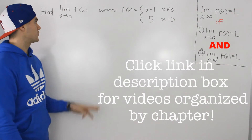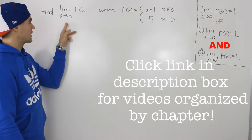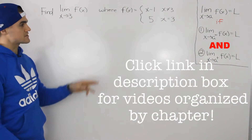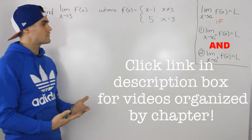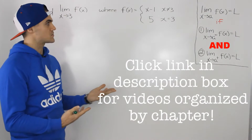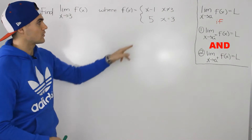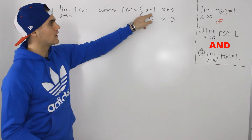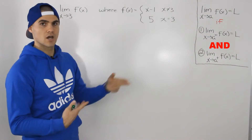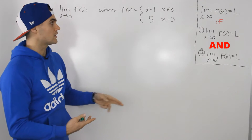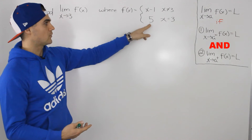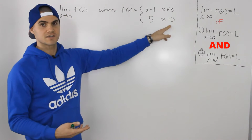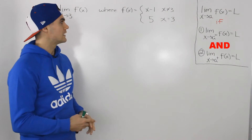Moving on to the next example, we have to find the limit as x approaches 3 of f of x, where f of x is this piecewise function, where the y values are x minus 1 when x is not equal to 3, and the y value is 5 when x does equal 3.